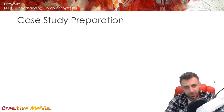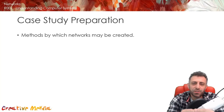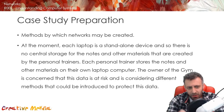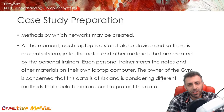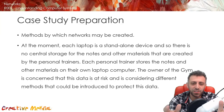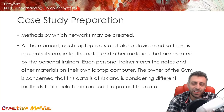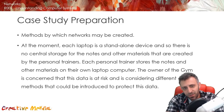In terms of where this will link to your case study — methods by which a network may be created — I believe that will be part of the second set of bullet points on the second page of your case study preparation. I extracted a portion of your case study where they explain that currently in the gym there is only a standalone laptop and they are not connected to a network. There is no central storage, and the owner of the gym is concerned that the data is at risk and is considering different methods that could be introduced to protect the data. One of those methods is to set up a network, which is why they put methods by which networks may be created in your preparation list.